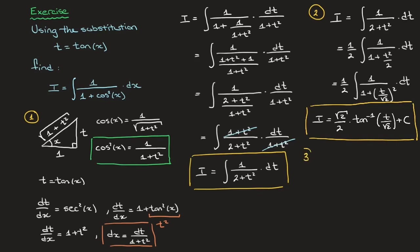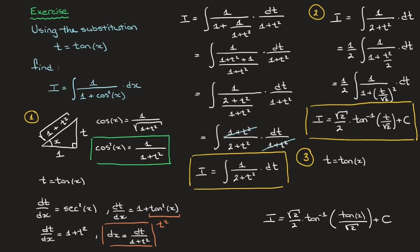We move on to the third and final step, where we use t equals tan of x to rewrite the answer in terms of x. Replacing every t by tan of x, we get I equals root 2 over 2 times arctan of tan of x over root 2, plus constant C. That's the final answer, and that's how we integrate 1 over 1 plus cosine squared of x using the substitution t equals tan of x.